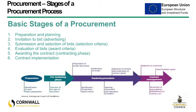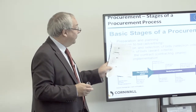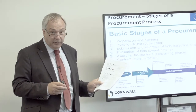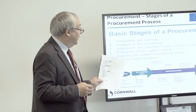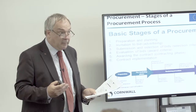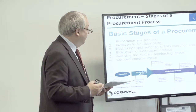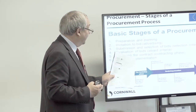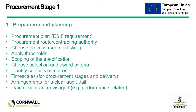The stages of procurement — I'm going to run through this pretty quickly but I hope it will be useful. There are basically six stages: preparation and planning; the invitation to bid process; the submission and selection of bids; the evaluation of bids using award criteria; the contracting process; and the implementation of the contract. I'll come back and explain the difference between selection and award criteria later on because it's really important to get that right.